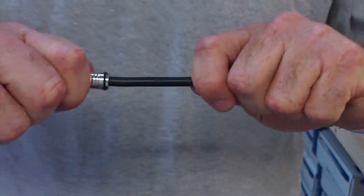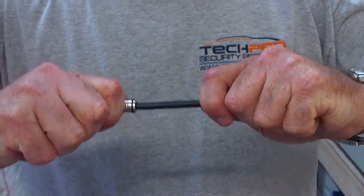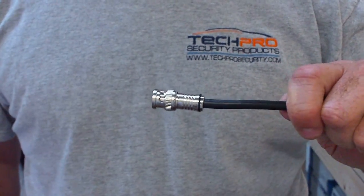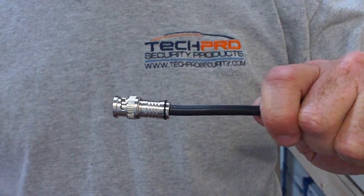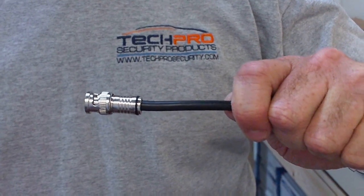and you'll see here how tight the fitting is. You can pull with as much pressure as you want, and it won't come off. And it's a great way to install compression BNC fittings to RG59 cable.